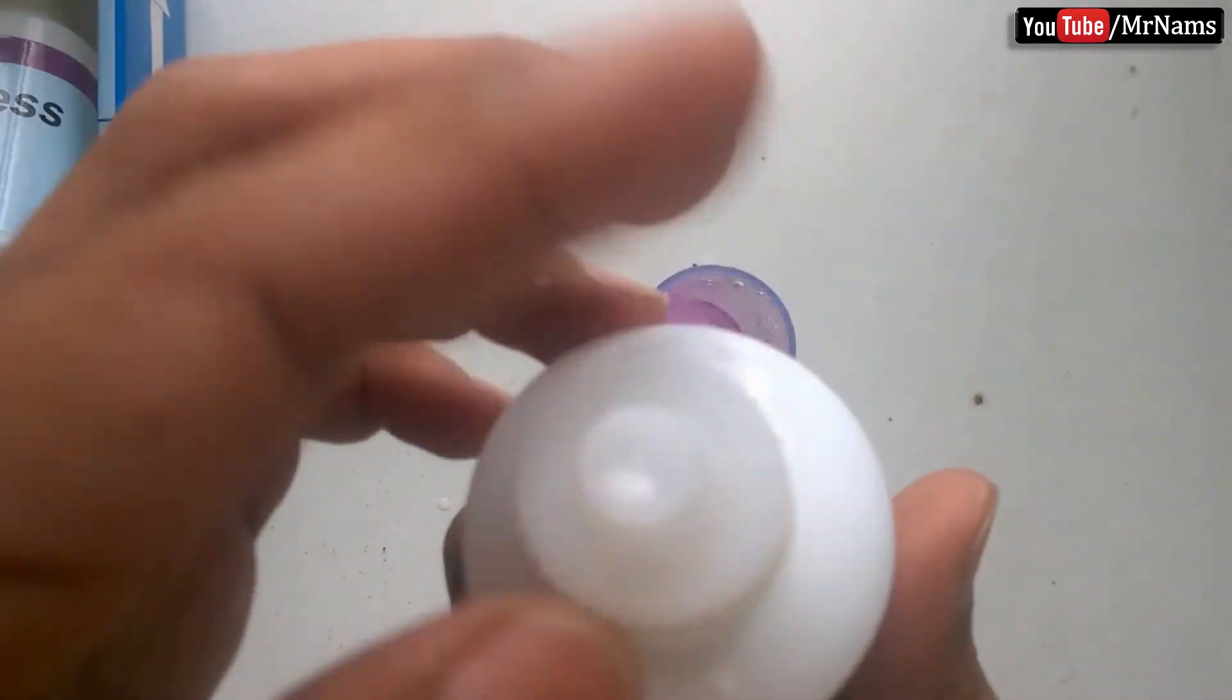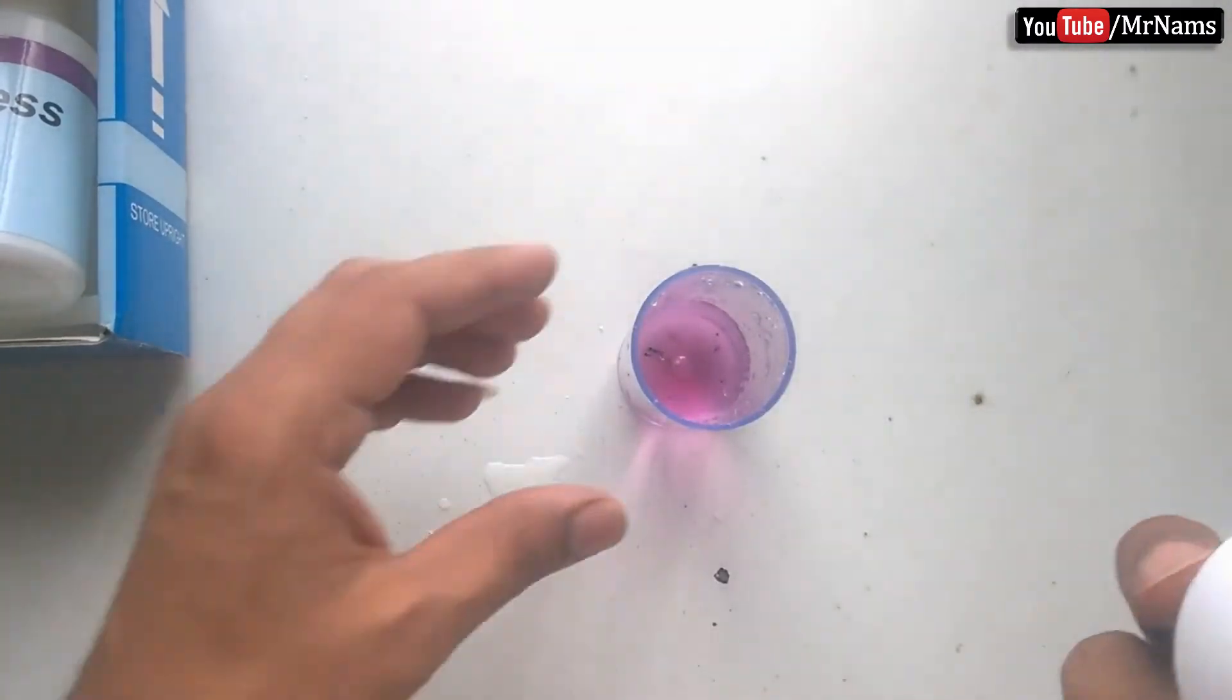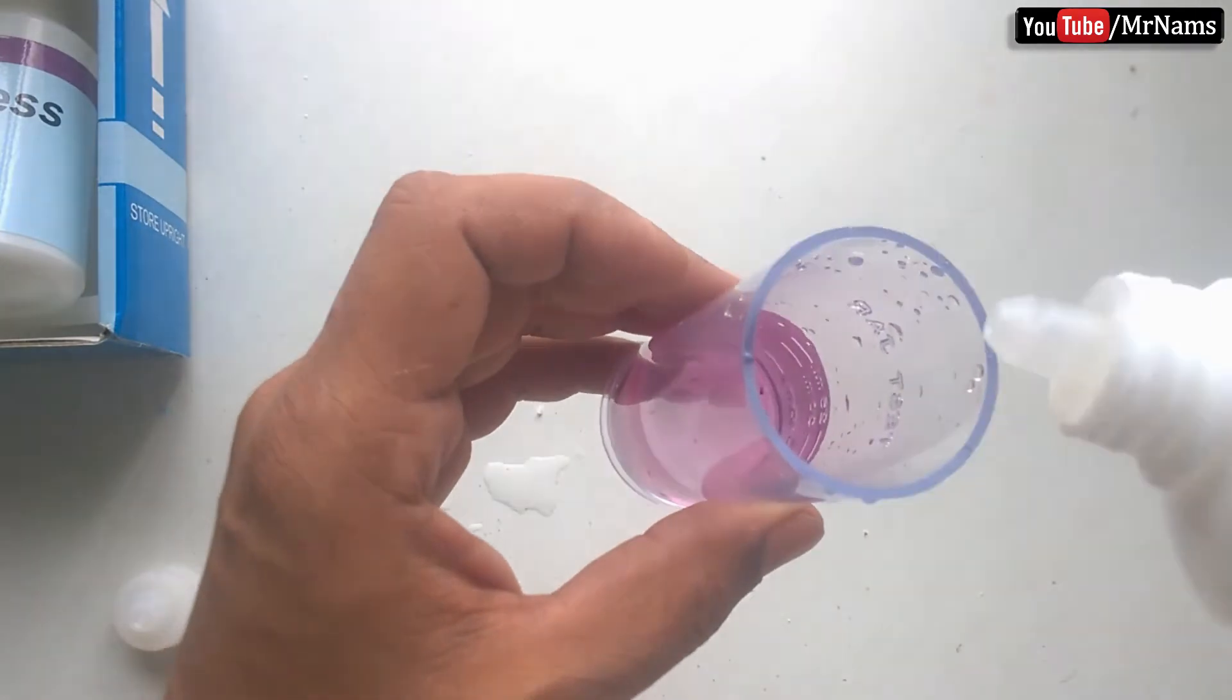Now add reagent D5 with gentle shake after each drop, until color changes from pink to blue.